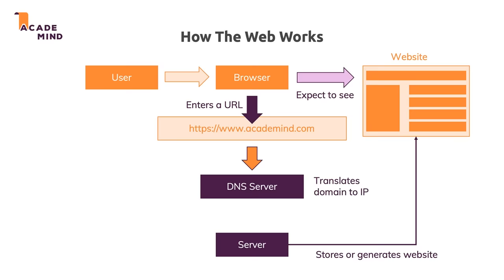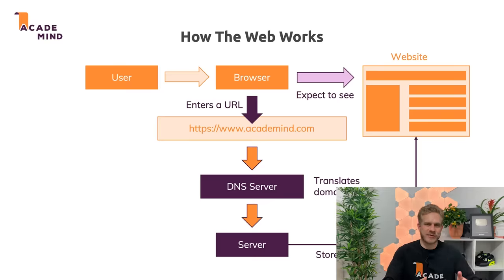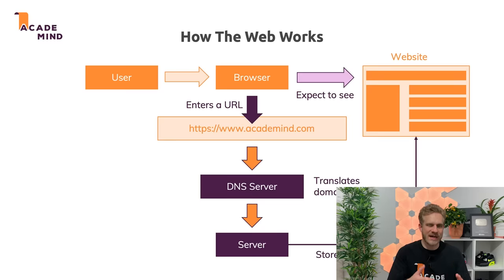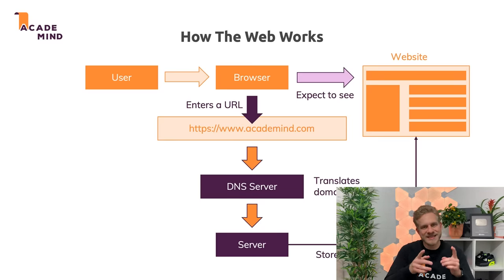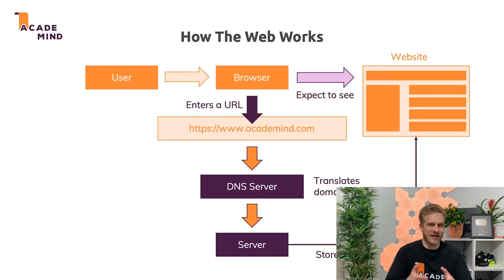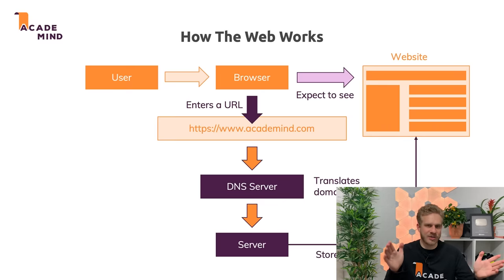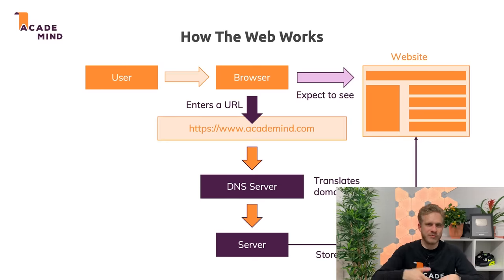This IP address is then given to the browser, and with that the browser can actually make a request to the server which has that IP address. There, as I mentioned, we have or we generate the source code for the website, and then this is sent back to the browser where the website is displayed. That is how this works in a nutshell. Now, the part where you enter the URL — so acadamind.com — and send this off to the internet, that is called a request.